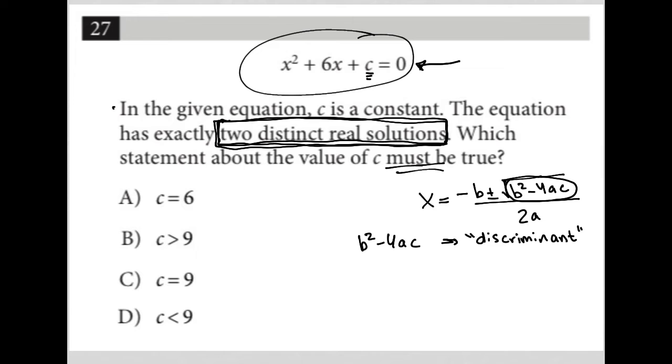So in order for you to have two distinct real solutions, the discriminant must be greater than 0. And hopefully that makes sense. If it were less than 0, under a radical here, we'd end up with imaginary solutions, not real solutions.